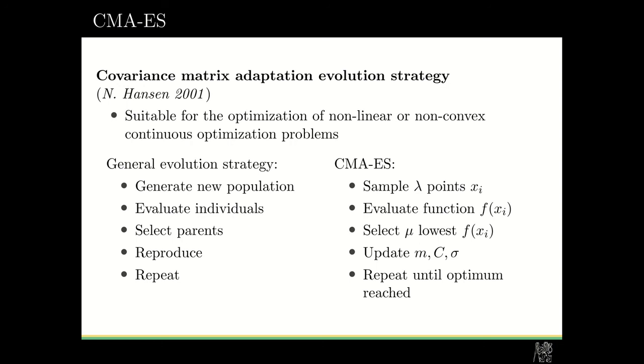For CMA-ES, this means that we sample several points in the space, we evaluate the function in those points, and then we select some of the lowest function values. And we update the parameters: M for the mean, C for the covariance matrix, and parameter sigma. And we repeat until the optimum is reached.